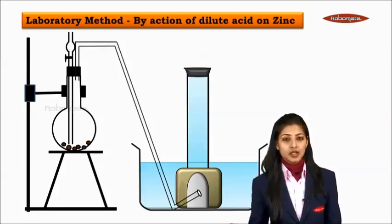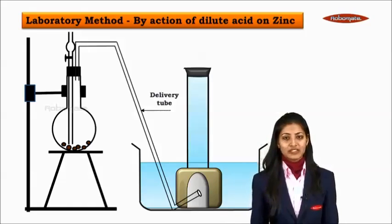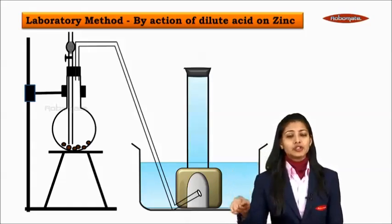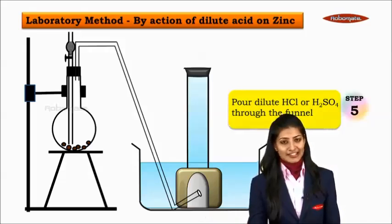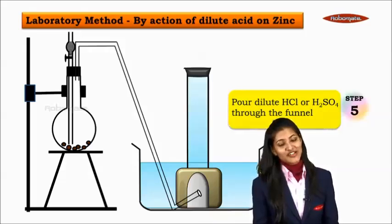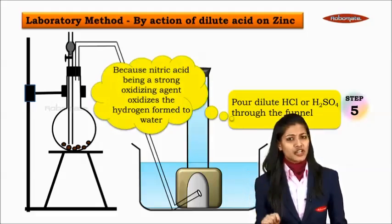Now since the apparatus set up is done, let us move ahead to how to perform the experiment. Through the thistle funnel, we are going to pour either dilute HCl, that is hydrochloric acid, or dilute sulphuric acid through the funnel. Not the nitric acid. Why?